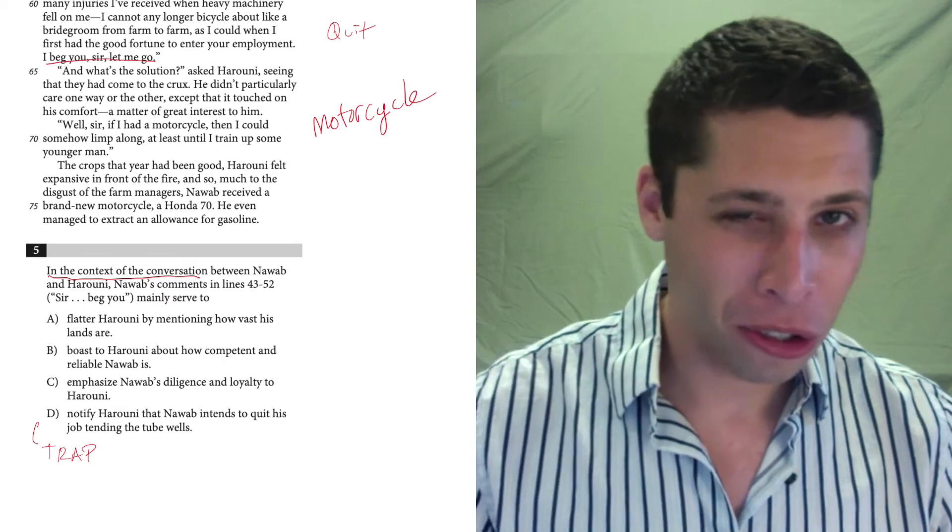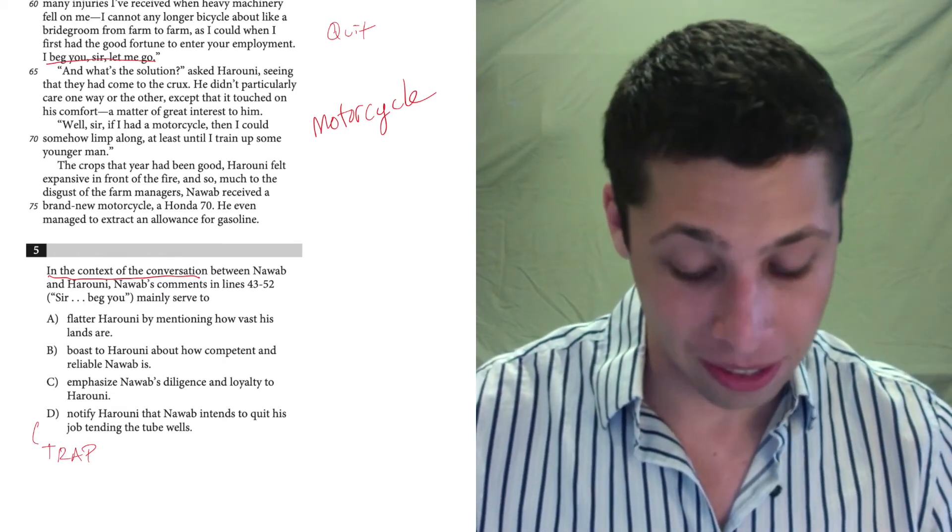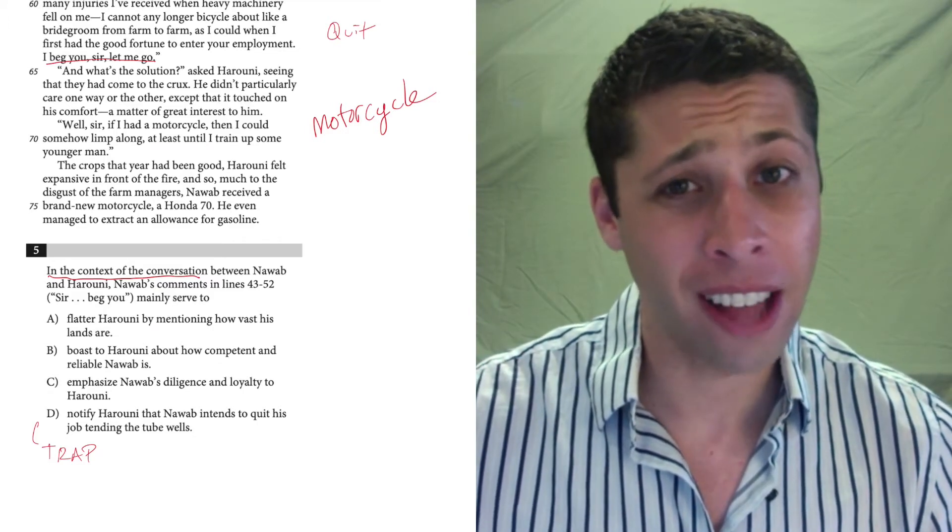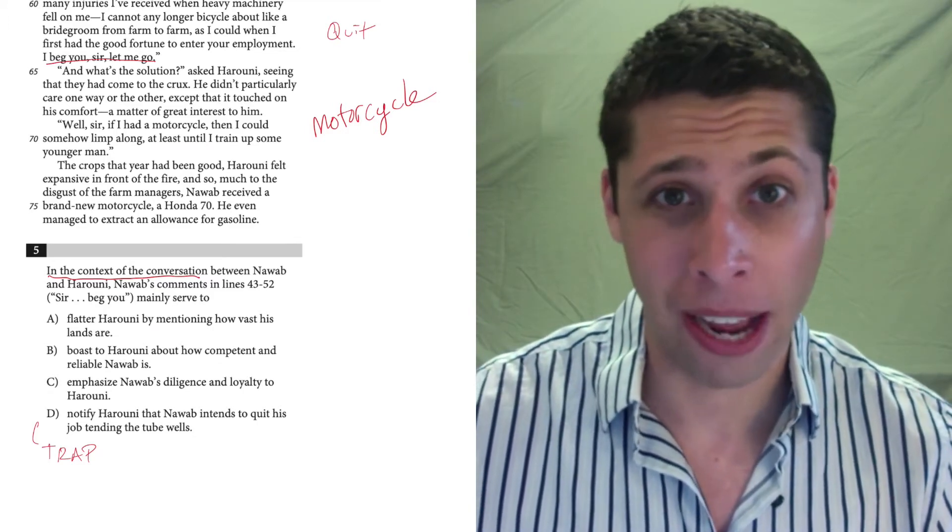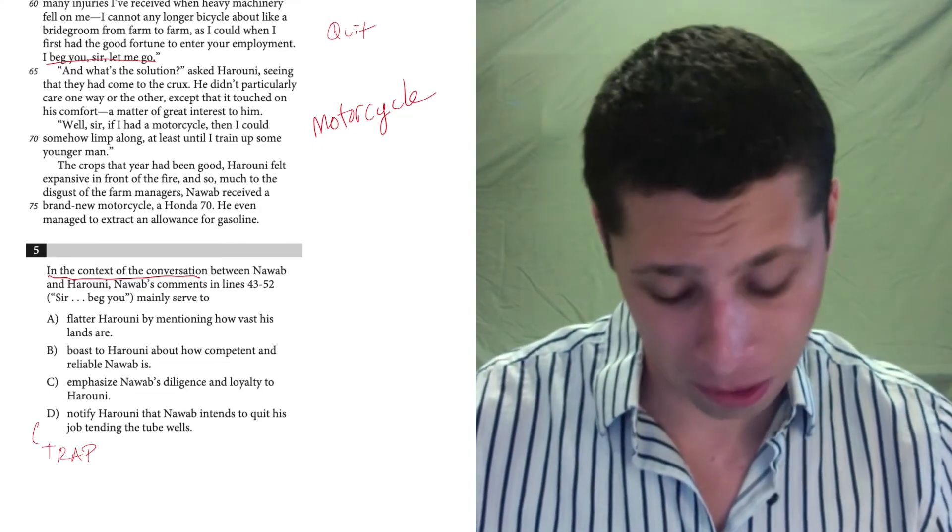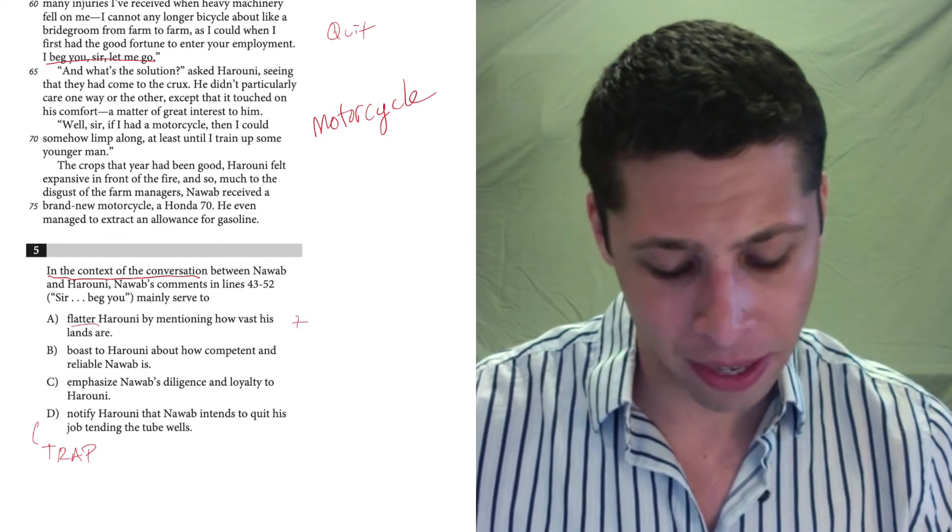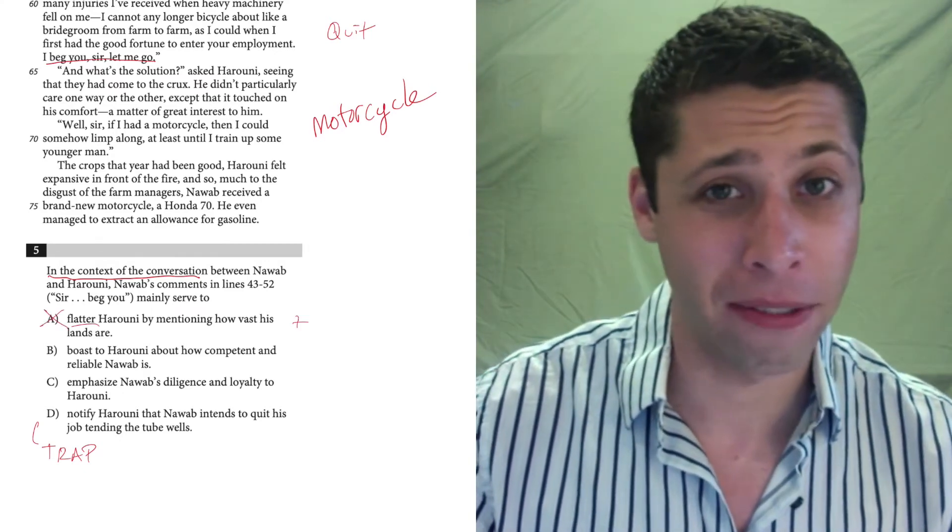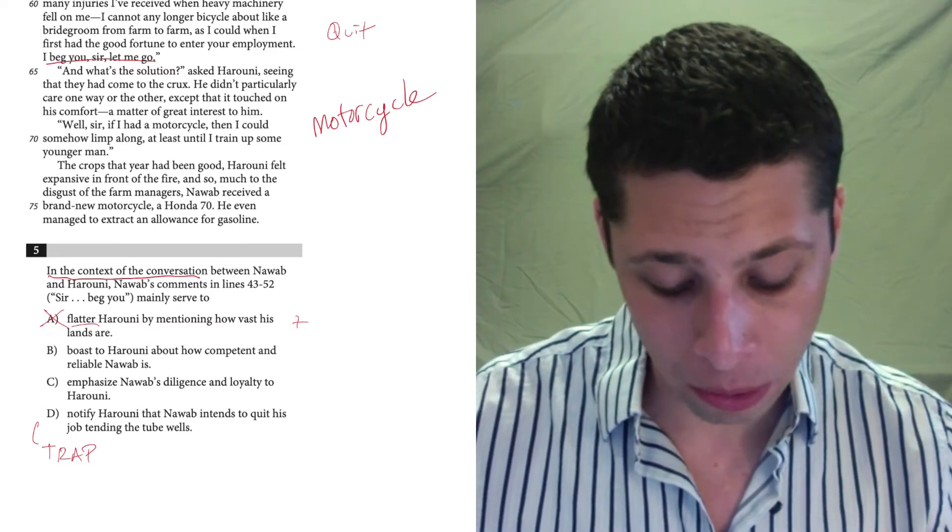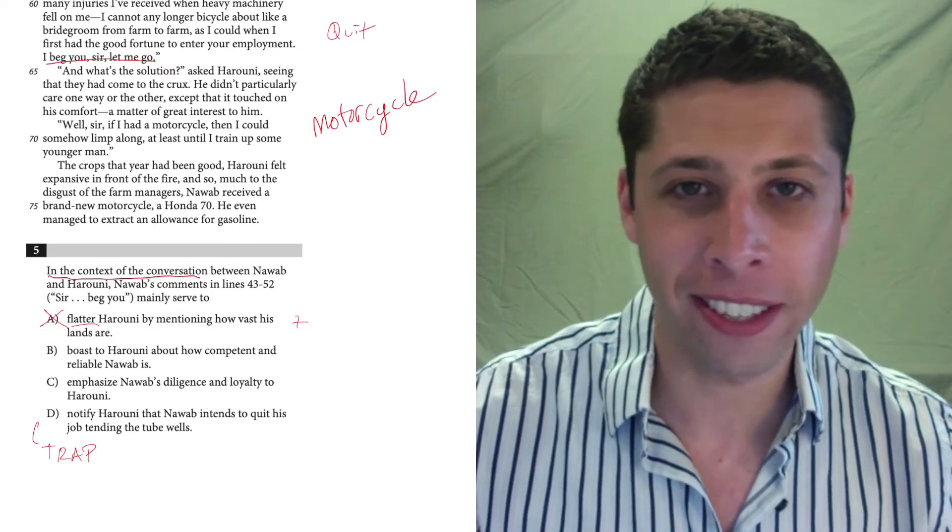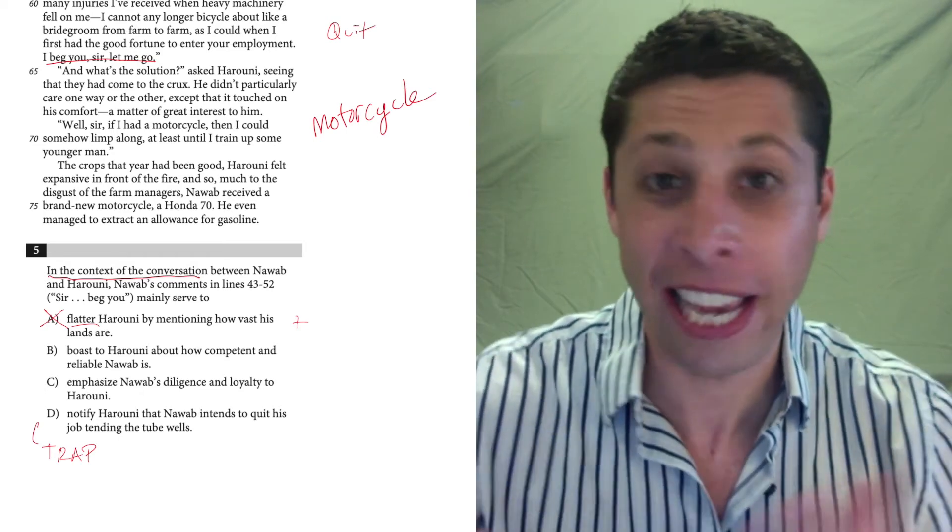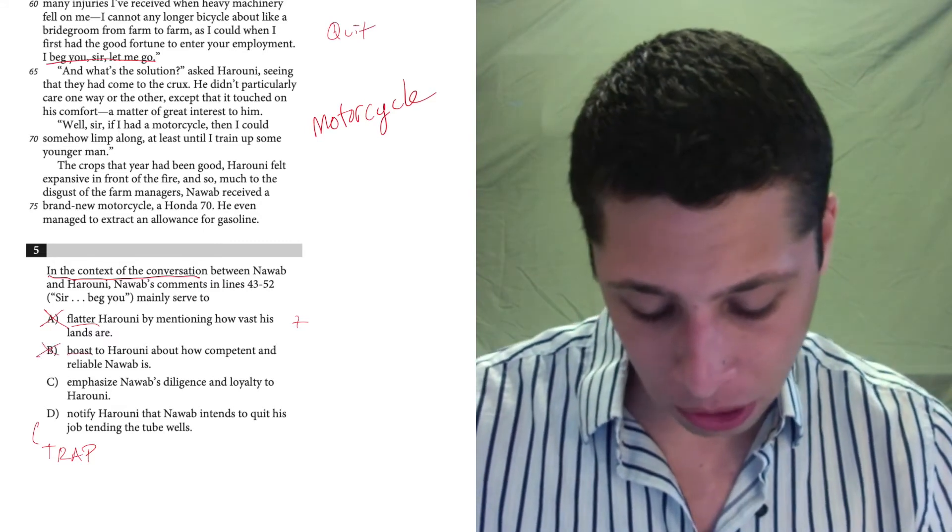So now we can look at these choices and we can see if there's a better one than choice D. Does he try to flatter Haruni by mentioning how vast his lands are? No. He says a lot of negative things about Haruni, about how this job has kind of beaten him down and he's old and machinery is falling on him. So flatter is positive. I don't think we've got a lot of flattering going on here. Boast to Haruni about how competent and reliable Nawab is? No. He constantly says how beaten down and old and feeble he is. He's complaining and saying that he can't do the job. So boast is the wrong word.